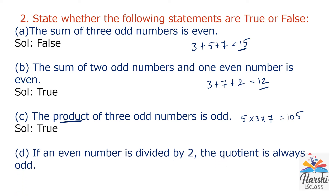Statement D: If an even number is divided by 2, the quotient is always odd. It is a false statement. For example, take even number 16. Let's divide it by 2: 2 eights are 16, remainder 0. The quotient is 8, which is an even number, not an odd number. So D is false.